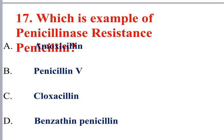Question 17: Which is an example of penicillinase-resistant penicillin? Amoxicillin and ampicillin are broad-spectrum synthetic penicillins. Food interferes with ampicillin absorption; amoxicillin 1g BD for 14 days is used. Penicillin V (phenoxymethyl penicillin) is acid-resistant. Cloxacillin, flucloxacillin, and dicloxacillin are penicillinase-resistant penicillins — the answer is Option C.